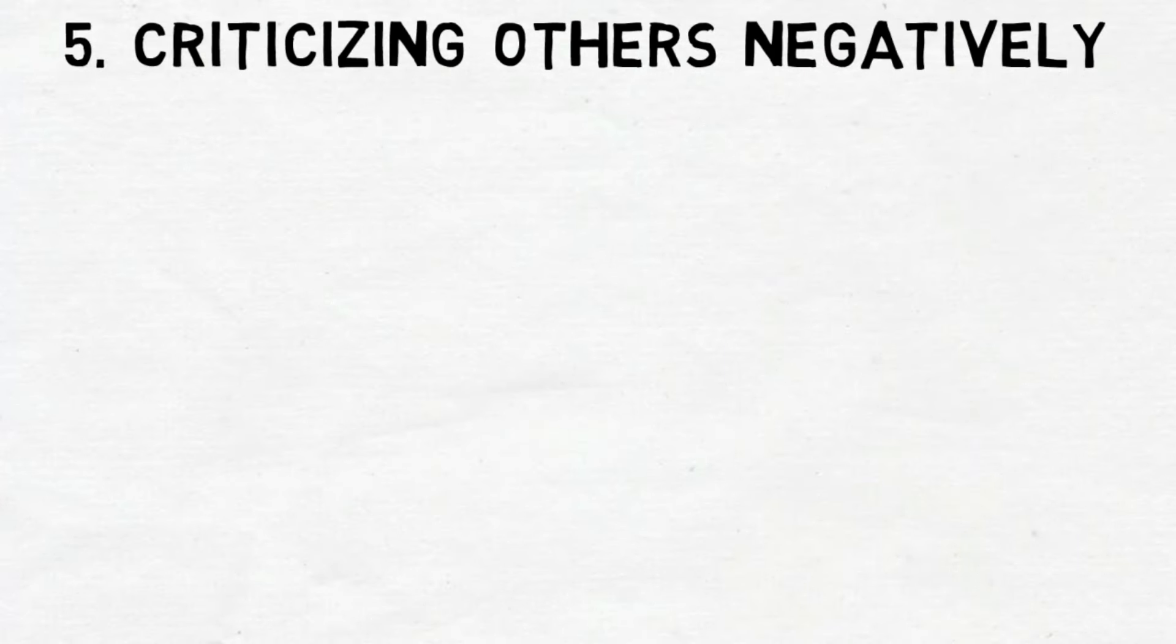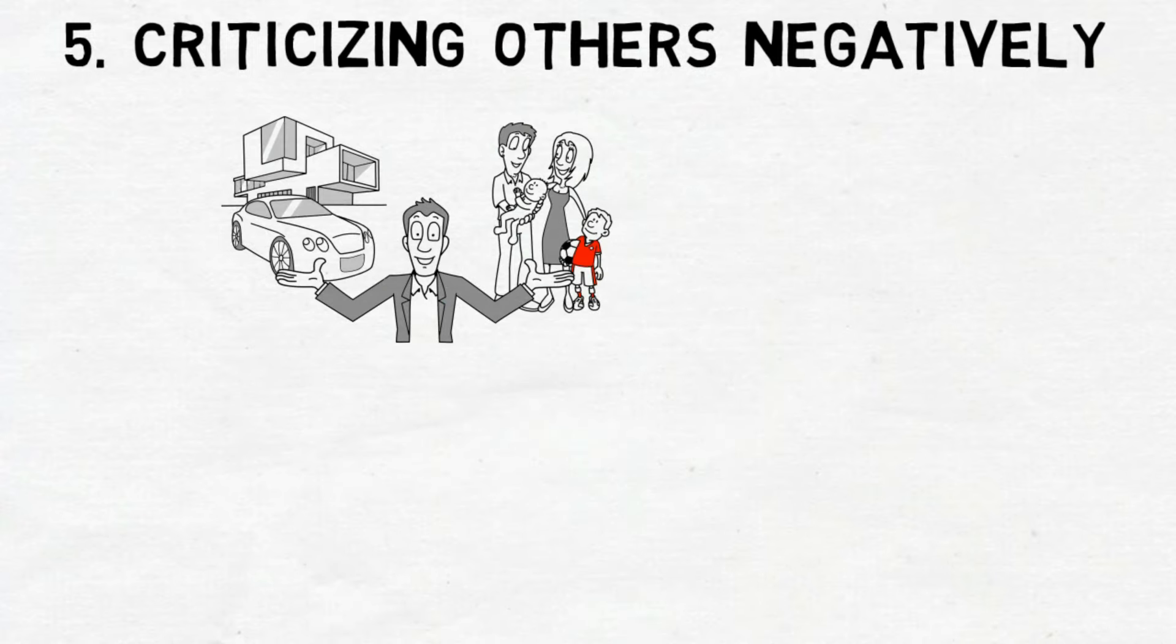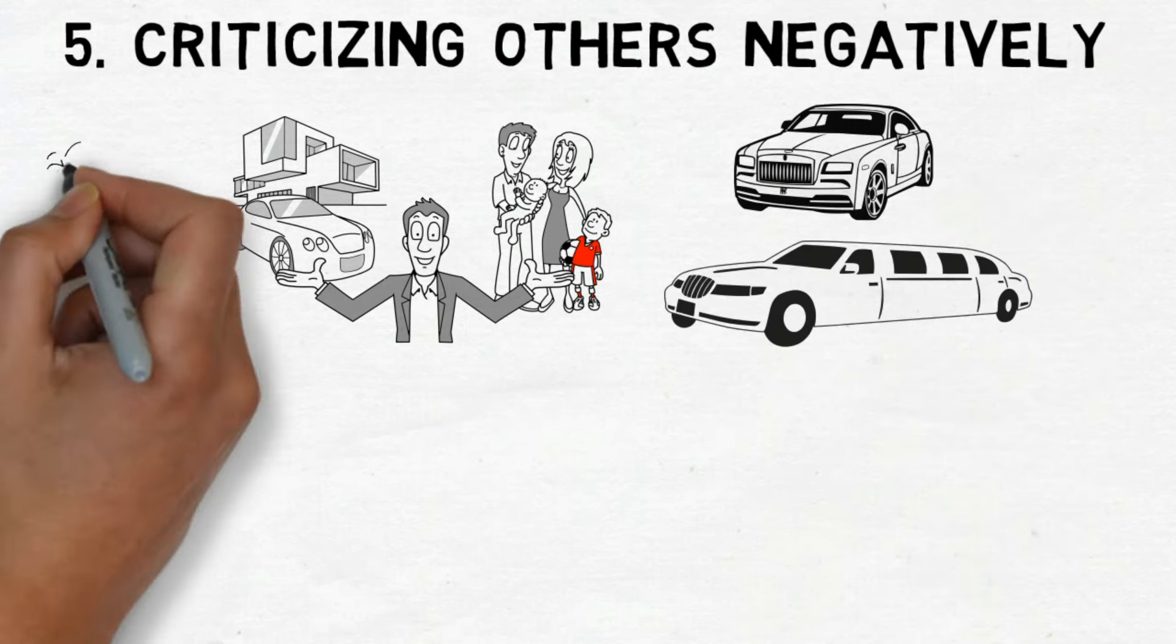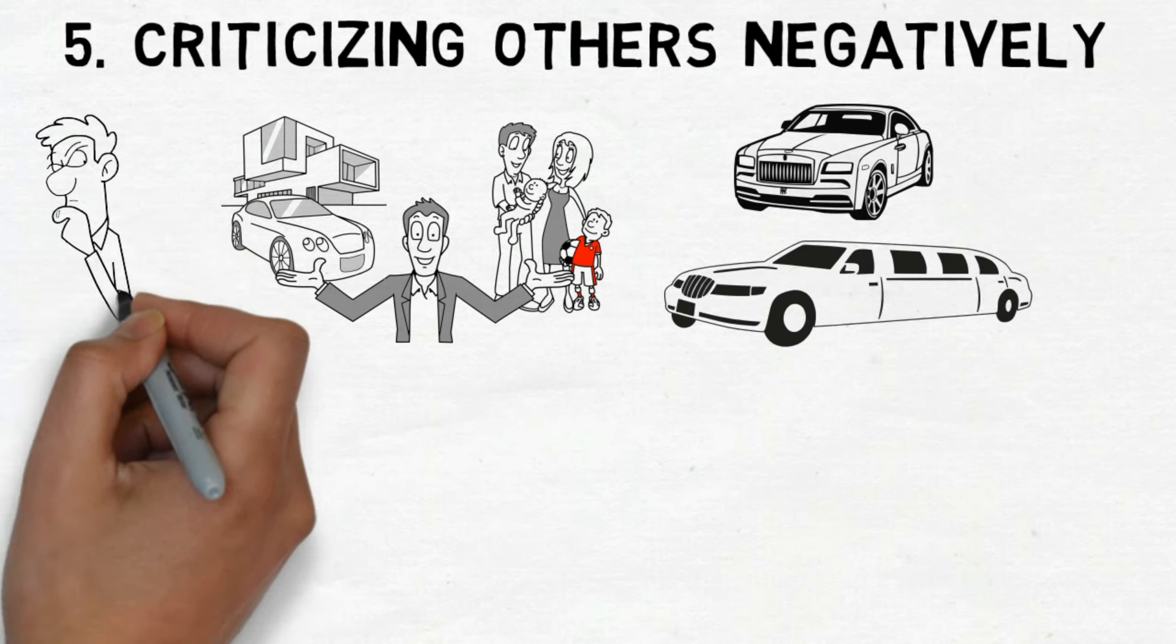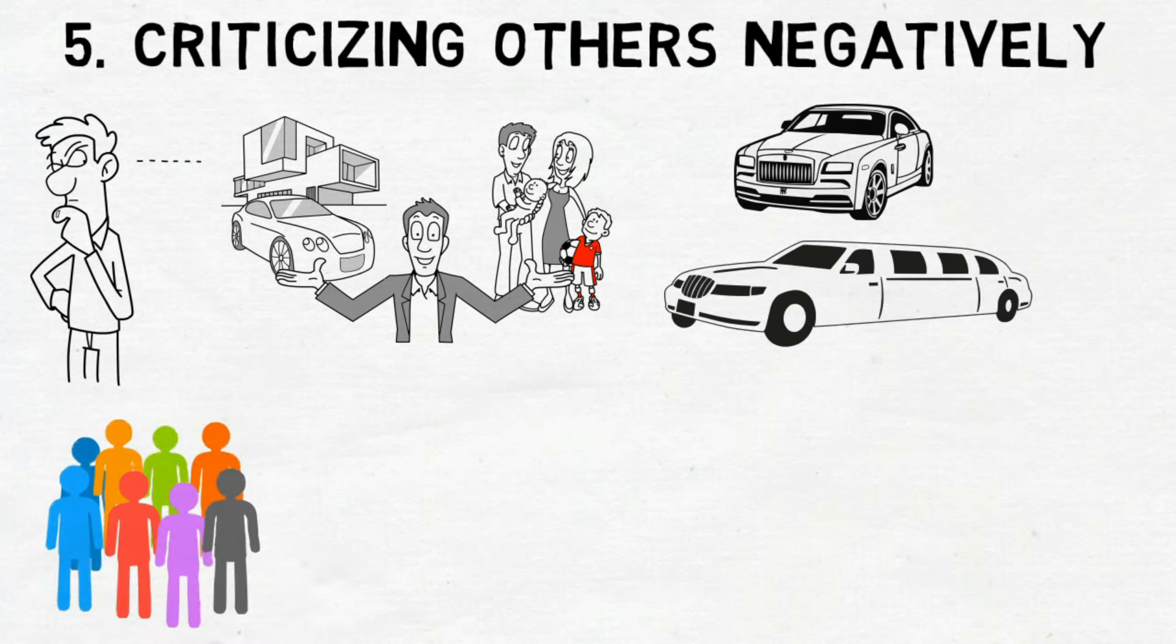Number 5. Criticizing Others Negatively. What do you do when you meet people who have a lot of money and success? When you encounter luxury vehicles like Rolls Royces or limousines, what thoughts arise? Do you find yourself frequently expressing grievances about the wealthy? Do you view them as a detriment to society?